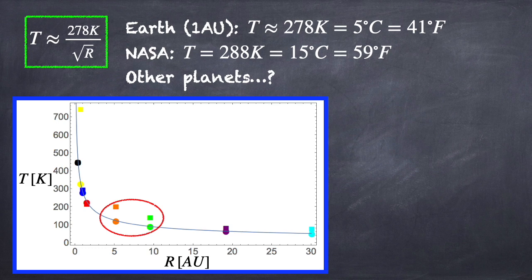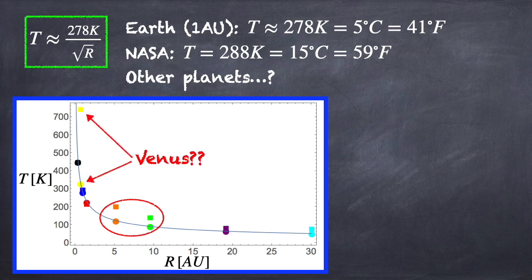Now, I don't know if you noticed, but there is one glaring problem here, which is Venus, which is way off by about 400 degrees. So what's going on here? Well, Venus has a very thick atmosphere. And as a result, it's got a very strong greenhouse effect, trapping heat and significantly increasing its temperature. In fact, this also explains why our predicted temperature for the Earth is a little bit lower than what's measured.